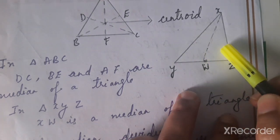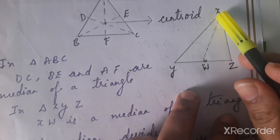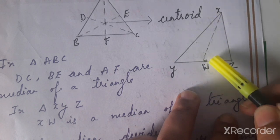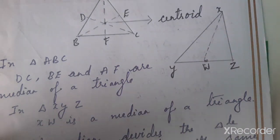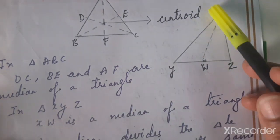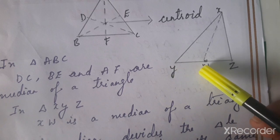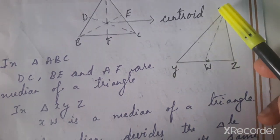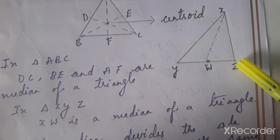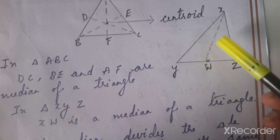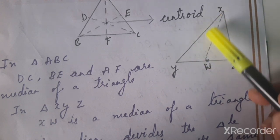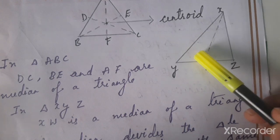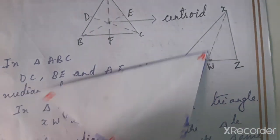When a median is drawn in a triangle, it divides the triangle into two smaller triangles. Here we get triangle XYW and triangle XWZ. Median XW divides the triangle into two congruent parts, meaning the area of triangle XYW is equal to the area of triangle XWZ. So when a median is drawn, it divides the triangle into two parts of equal area.